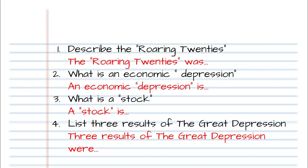On a piece of paper you should write out your questions. For question one, describe the Roaring 20s — your sentence stem is 'The Roaring 20s was...' and then describe it. If you turn in your answer without writing it in a complete sentence, it will be marked wrong.